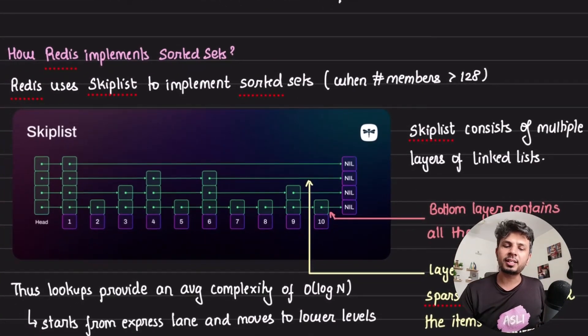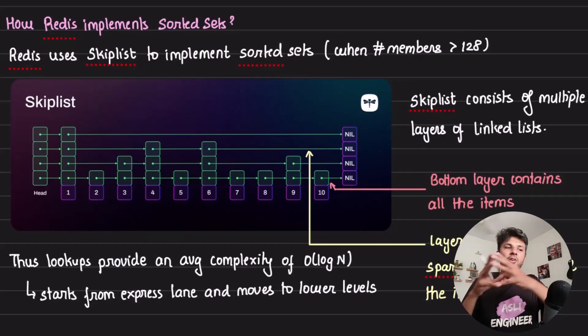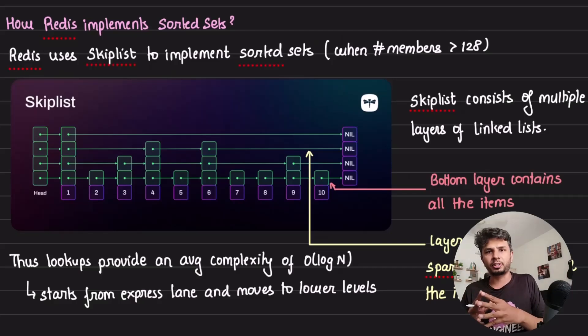Redis implements sorted sets using skip lists when the number of elements are more than 128. For less than that, it uses list pack, which is out of scope. We'll focus more on skip list for this discussion.